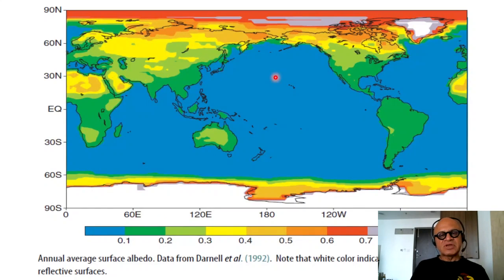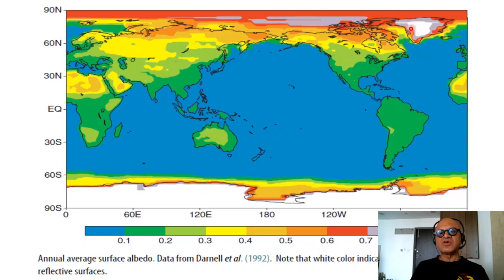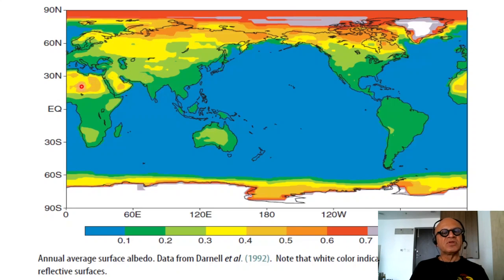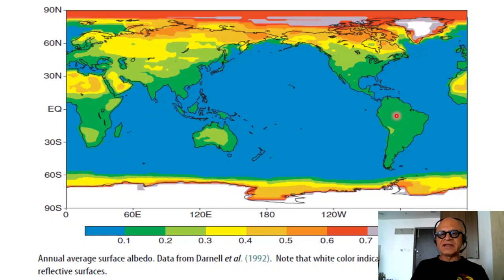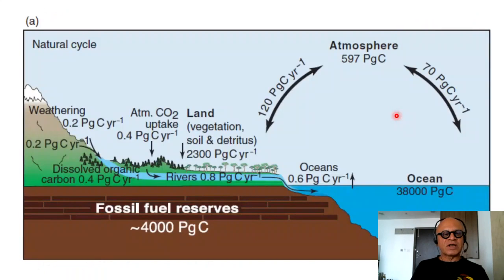The annual average surface albedo is relatively low over the ocean — it depends on the sun angle, but the average is pretty low. On land, it depends on whether there is snow and ice: glaciers in Antarctica and Greenland have albedos of almost 90% or higher. Deserts have high albedos, and the Third Pole and Himalayas show up prominently, as does snow over Eurasia. Various other combinations of forests and land cover create additional albedo variations.